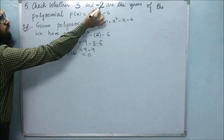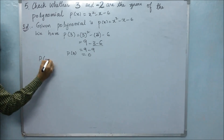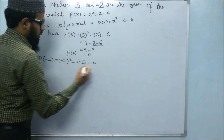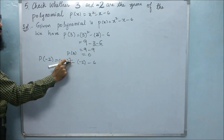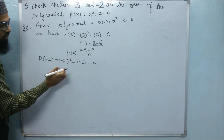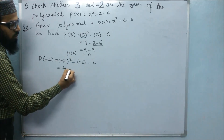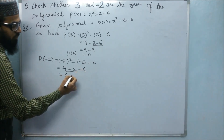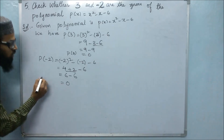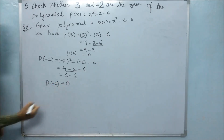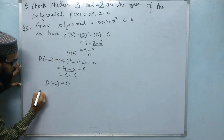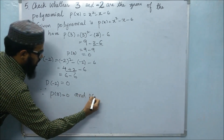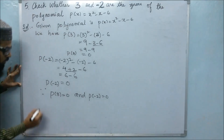Then we substitute in place of x minus 2. P of minus 2 equals minus 2 whole square minus minus 2 minus 6. Since the power is even, we get plus sign, and 2 square is 4. Minus into minus gives plus 2, minus 6. So 4 plus 2 is 6, and 6 minus 6 is 0. Since P of 3 is 0 and P of minus 2 is also 0, therefore 3 and minus 2 are the zeros of polynomial P of x.